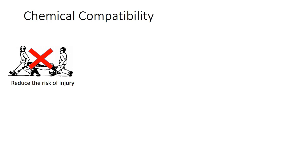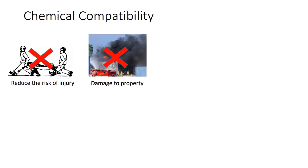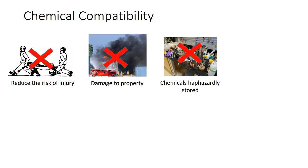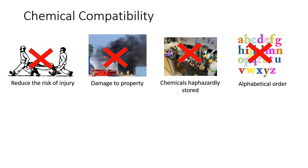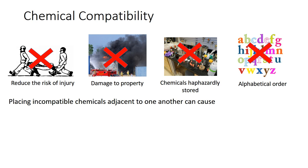Safe chemical storage practices can reduce the risk of injury or exposure, and damage to property. Chemicals should not be stored haphazardly, nor should they be stored in alphabetical order. Placing incompatible chemicals adjacent to one another can cause adverse reactions when in contact, leading to hazards such as: